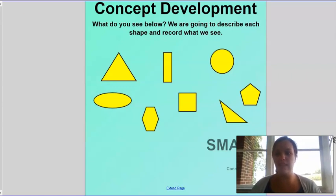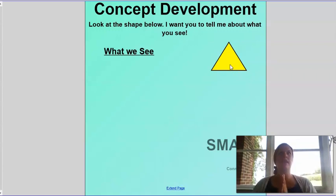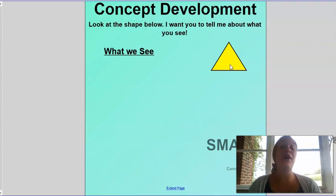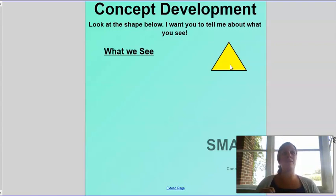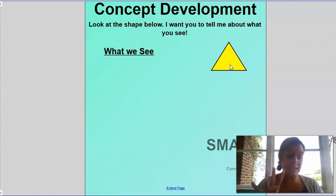Here is our first shape, right up in this right-hand corner. I'm going to put my mouse on there and I want you to pause me and think about what you see. Maybe you know the name of it already, maybe you don't — just think about what you see when you look at that shape. For today we're going to talk about the types of sides the shapes have, the number of sides, and maybe the color or size.